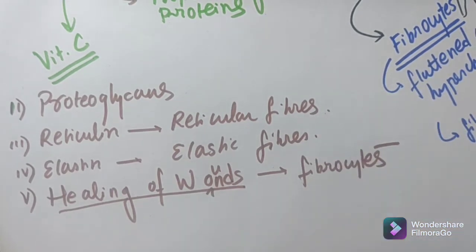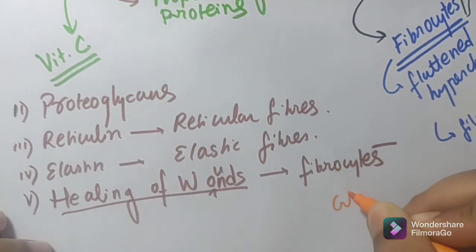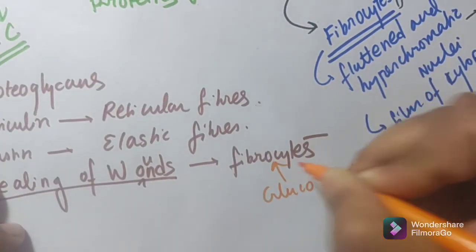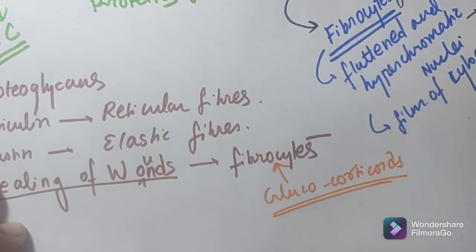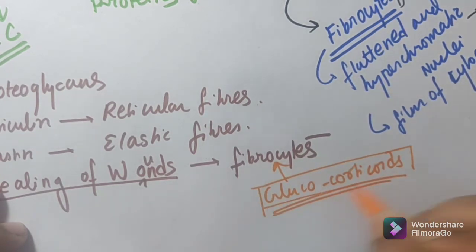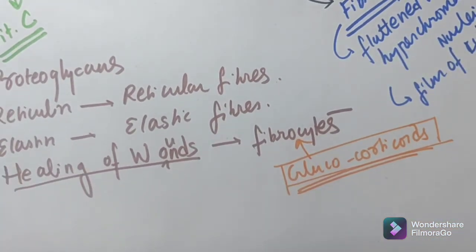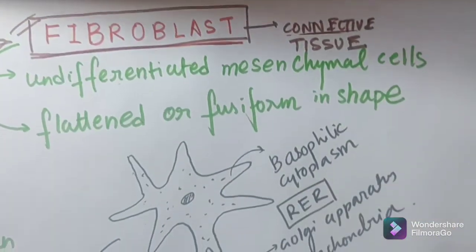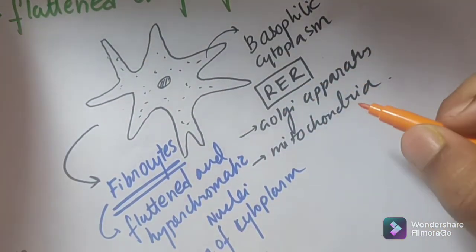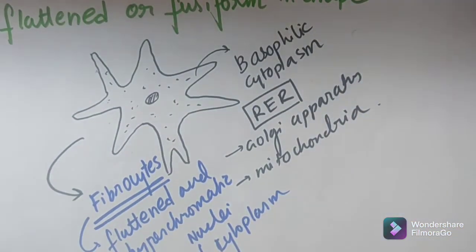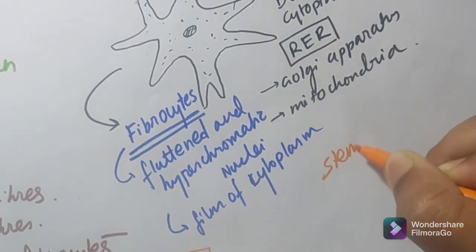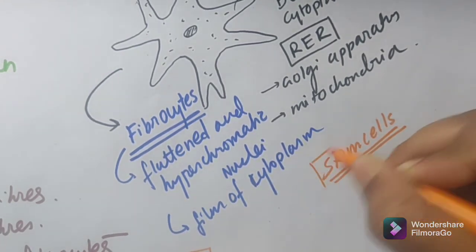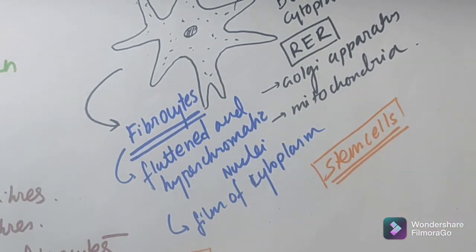Some fibroblasts form granular tissue when embedded in a vascular stroma as part of the repair process. Fibroblastic activity in wound healing is delayed by glucocorticoids, which means glucocorticoids act as an antagonist to fibroblast activity in wound healing. Additionally, fibroblasts also act as stem cells, helping in the formation of other cellular components.